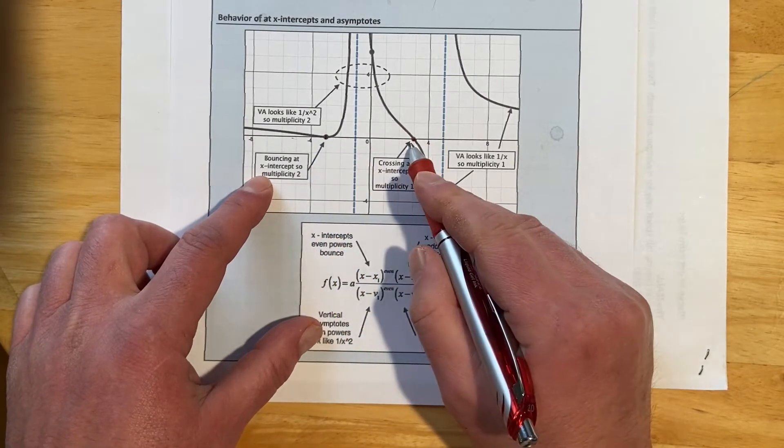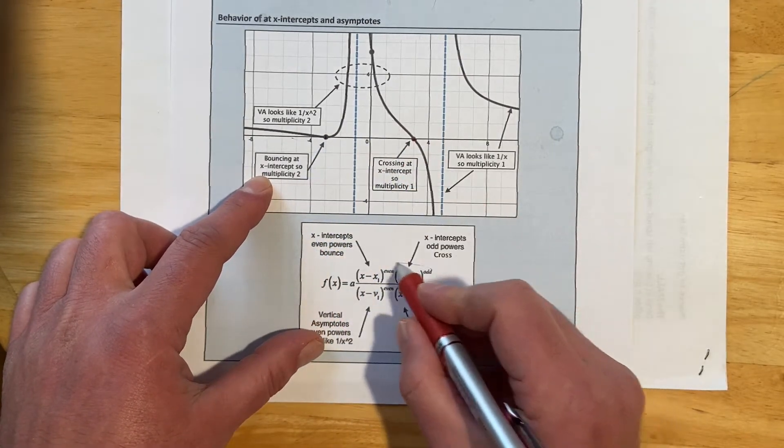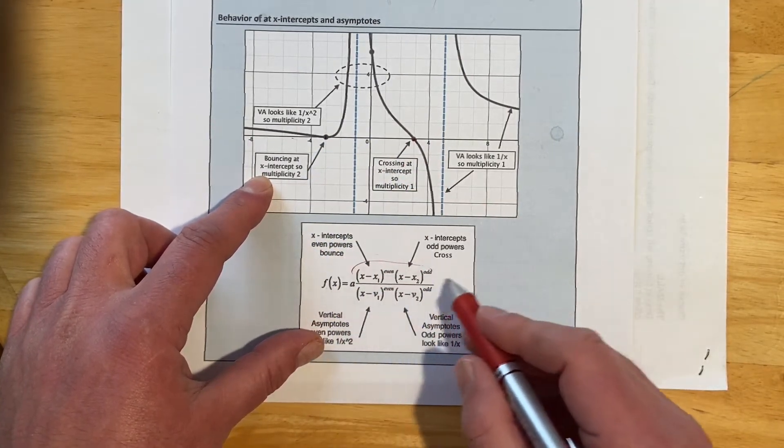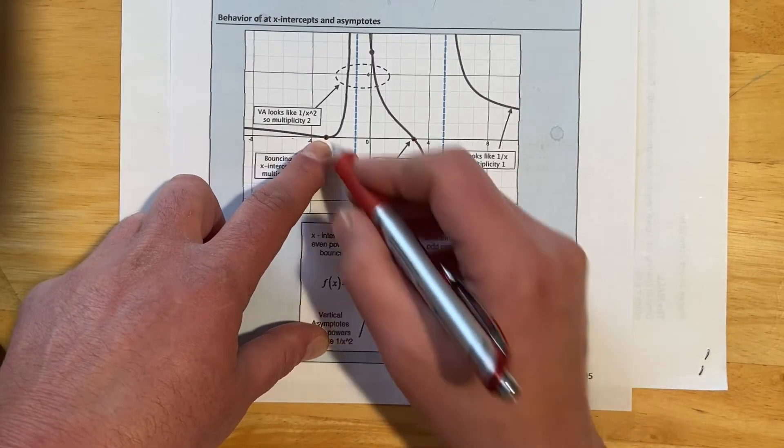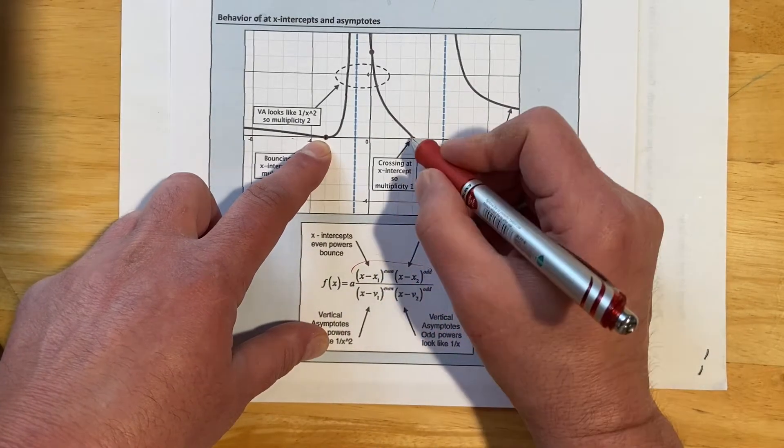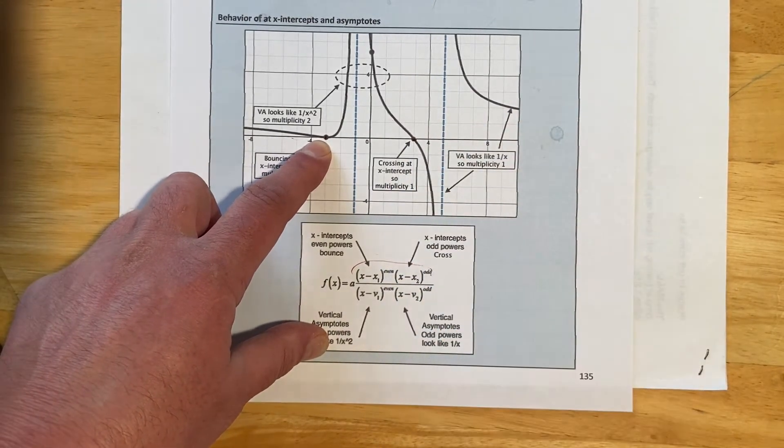So again, this bouncing and crossing at X intercepts, remember X intercepts are going to come from the numerator. So a bounce would be indicative of an even power. A cross is indicative of an odd power.